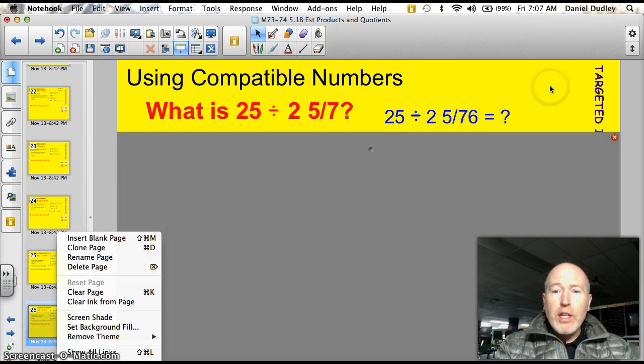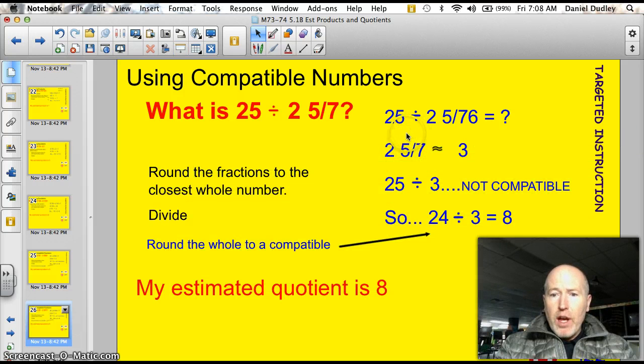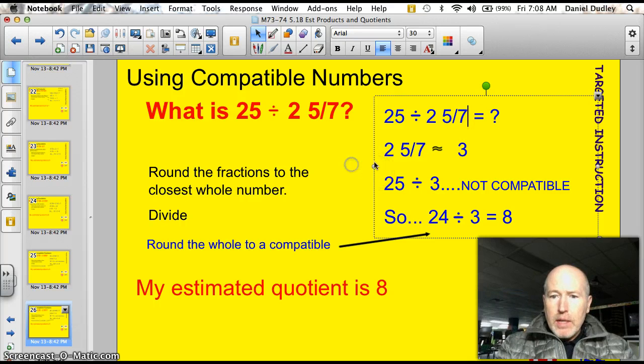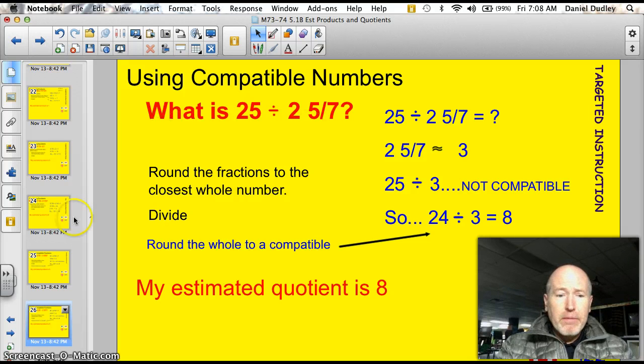Let's see if I've got an example for you to try. I do. Why don't you go ahead and try this one here. 25 divided by 2 and 5 7ths. Go ahead and pause the video. Let's see how you did. 25 divided by 2 and 5 7ths. 2 and 5 7ths. Well, that's about 3. 25 divided by 3. Again, these numbers are not compatible. So, round to a compatible number. 25 is close to 24, and 24 is divisible by 3. So, I'll just round down. 24 divided by 3 is 8. My estimated quotient, 8. Go up and check it. Make sure it makes sense. About 24 divided by about 3. Works for me.